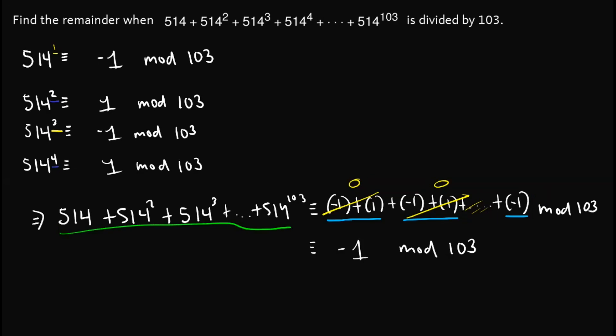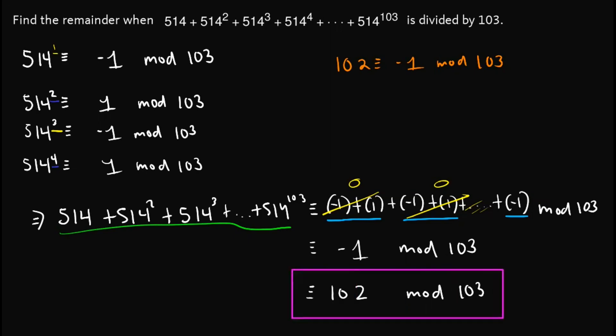And that is already the remainder of the whole expression. But if we want to treat it as a positive integer, we go back to what we found: 102 is congruent to negative 1, modulo 103. So we know that this expression is actually congruent to 102, modulo 103.